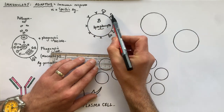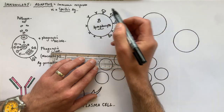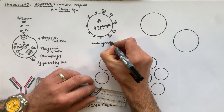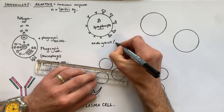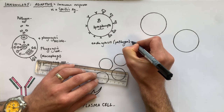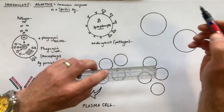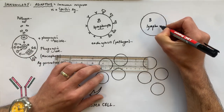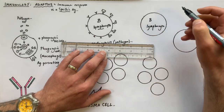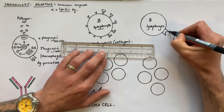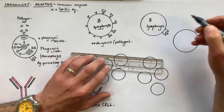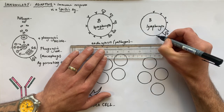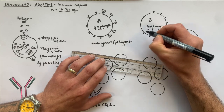Endocytosis of the pathogen occurs into the B cell. The B lymphocyte, similar to the phagocytic cell, then presents the antigen on its cell membrane via a receptor protein.